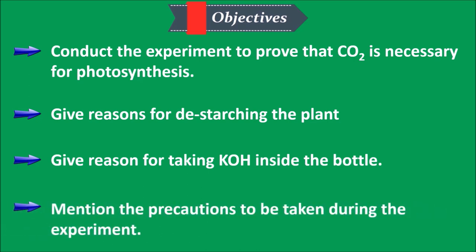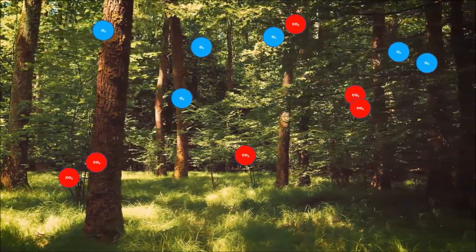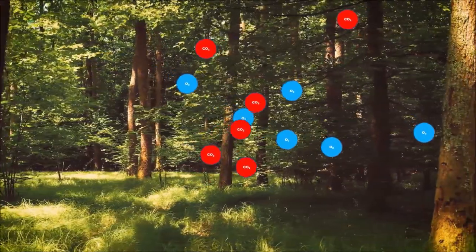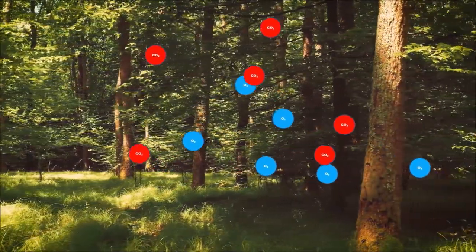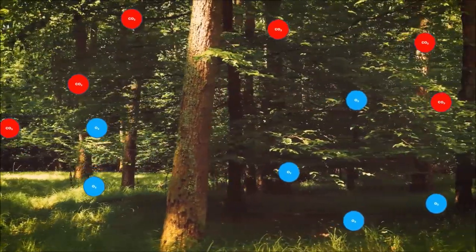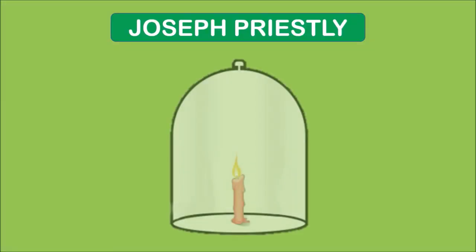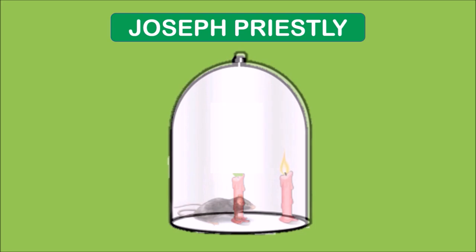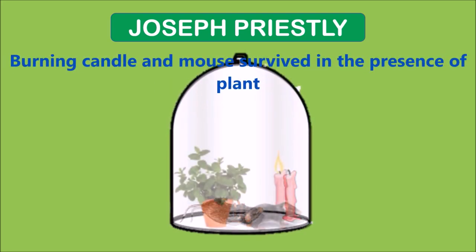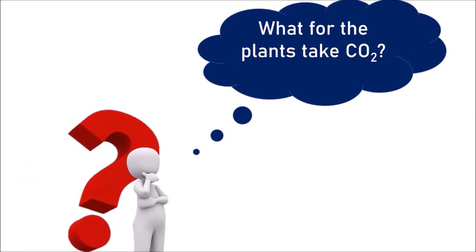As well as mention the precautions to be taken during the experiment. As we all know, plants are the natural doctors for the environment, as they take in carbon dioxide and release oxygen for life on earth. This is proved in Joseph Priestley's experiment, in which a burning candle and mouse survived only in the presence of a plant. What do plants take carbon dioxide for? Is it for photosynthesis?